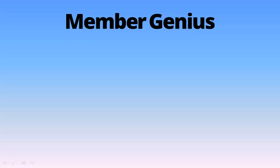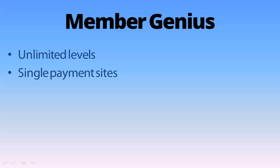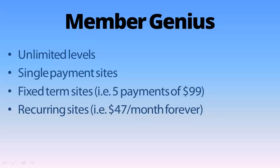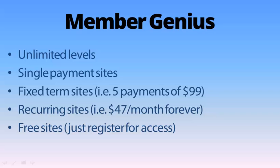MemberGenius is a very simple but powerful and easy-to-use WordPress plugin. You'll be able to set up an unlimited number of levels, meaning you can sell one, ten, a hundred, or a thousand different packages, offers, or products in one single site. You can take single payments like ten, fifty, a hundred, or a thousand dollars. You can run fixed-term membership sites such as five payments of ninety-nine dollars, or recurring sites where someone pays you seven, seventeen, or forty-seven dollars a month forever. And if they refund or cancel, they lose access to that level.